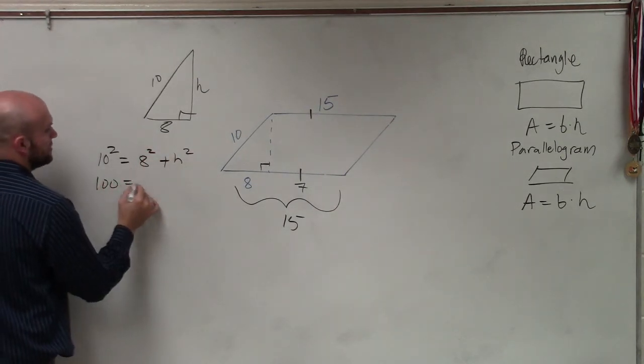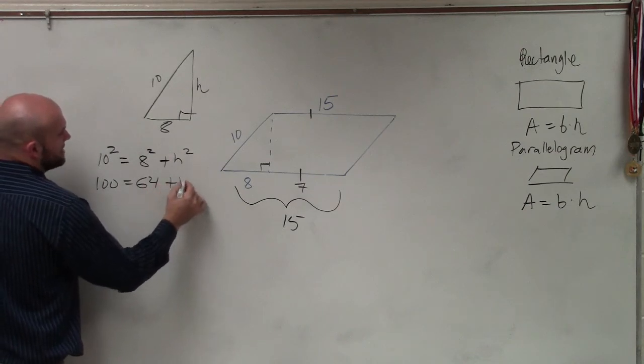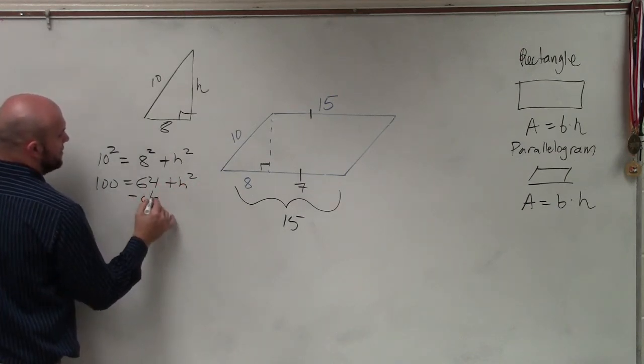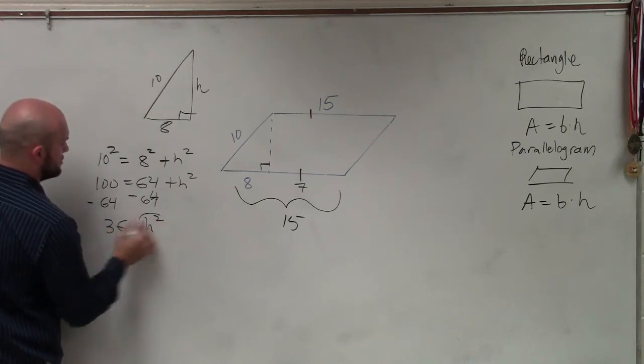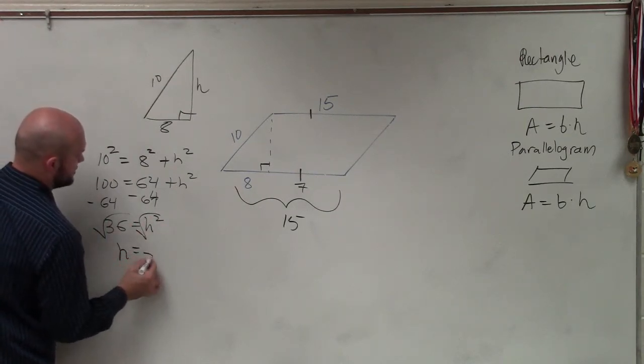Now, that's 100 equals 64 plus h squared, minus 64, minus 64. 36 equals h squared. Square root, square root, h equals 6.